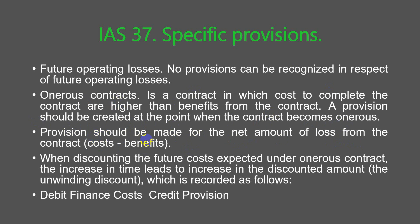The provision should be made for the amount of loss from the contract — this is important. So if we predict that our contract will be loss-making, then in respect of such loss we need to make a provision. When discounting the future costs expected under an onerous contract, the increase in time leads to increasing the discounted amount — the unwinding discount — which is recorded as follows: debit finance costs, credit provision.